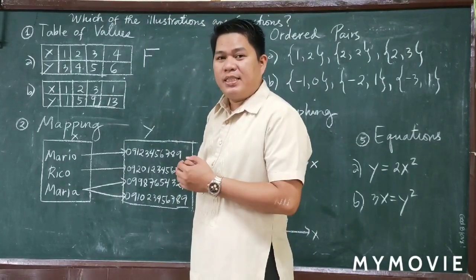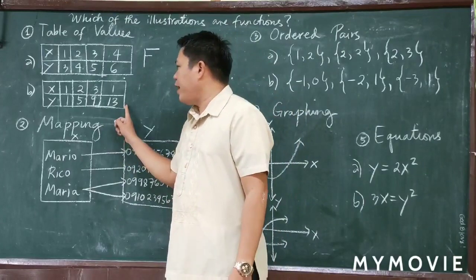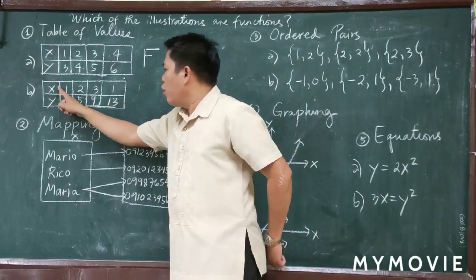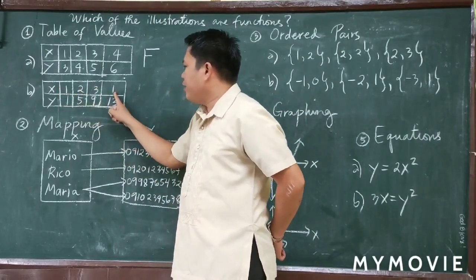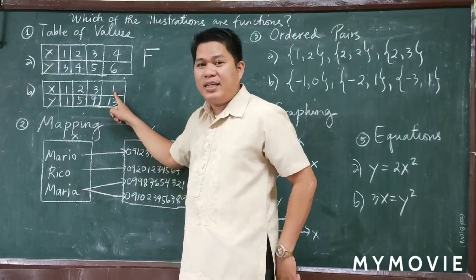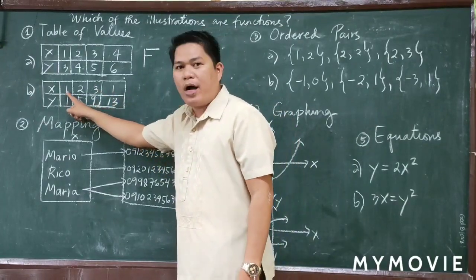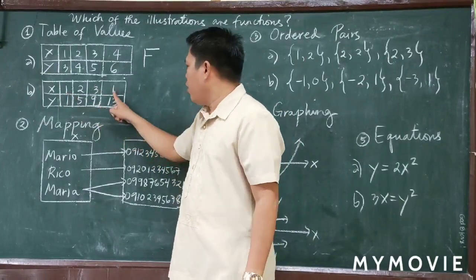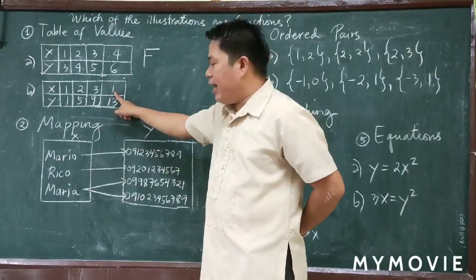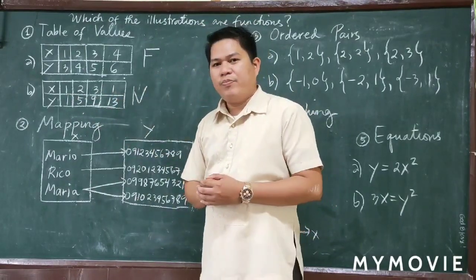For Letter B, is it a function or not? For the table of values, our domain X has values 1, 2, 3, 1. Since the value 1 repeats in the domain, this is not a function.